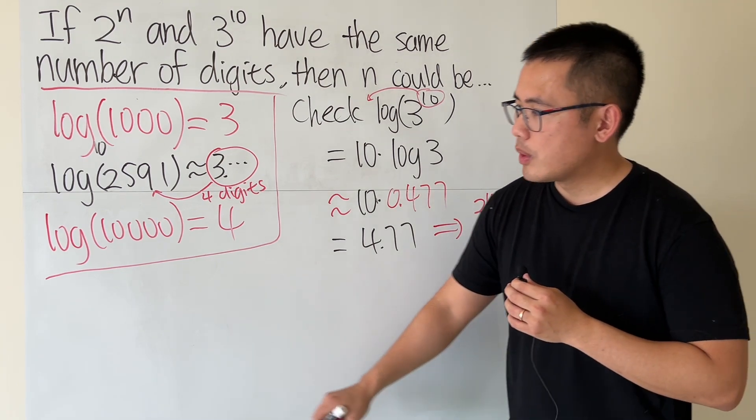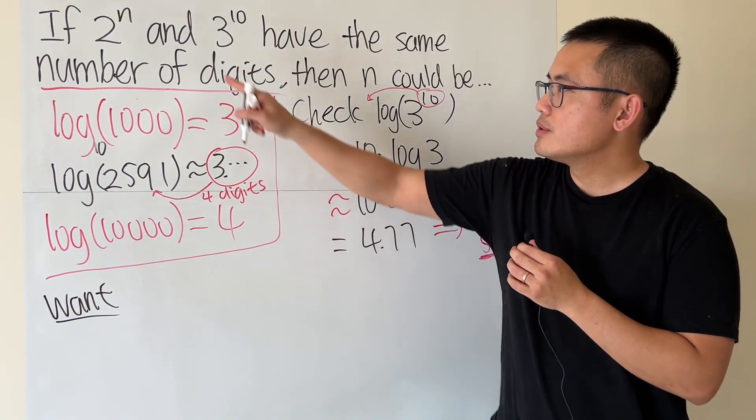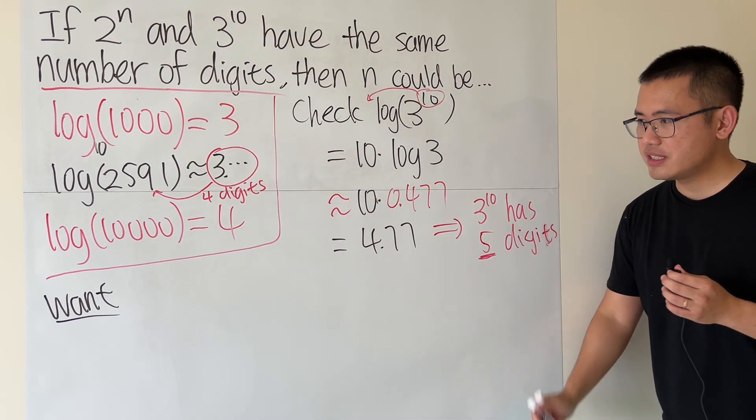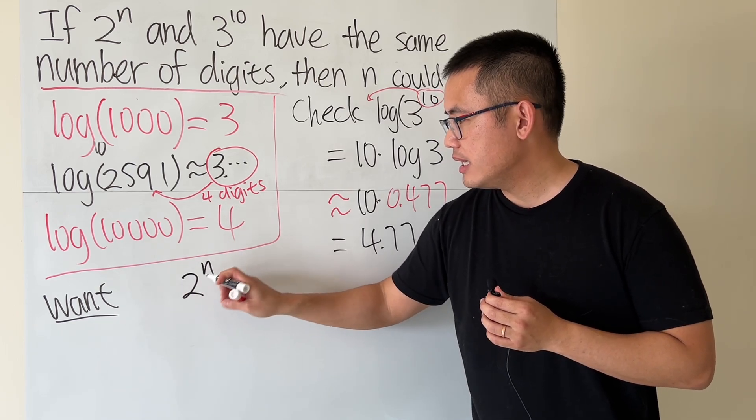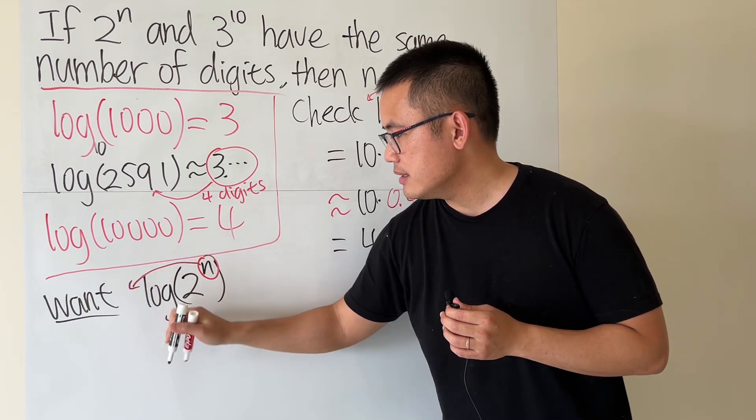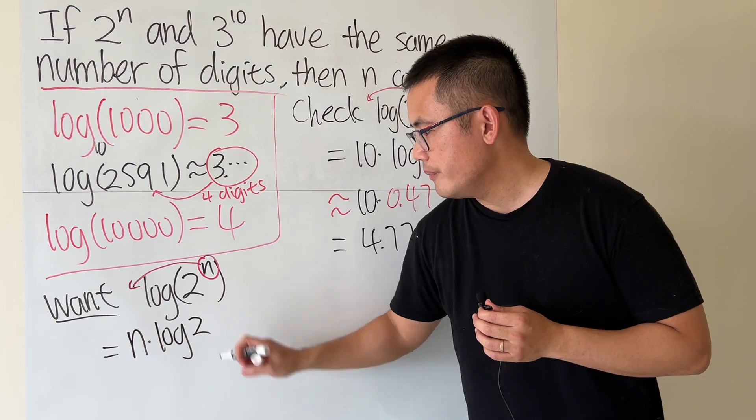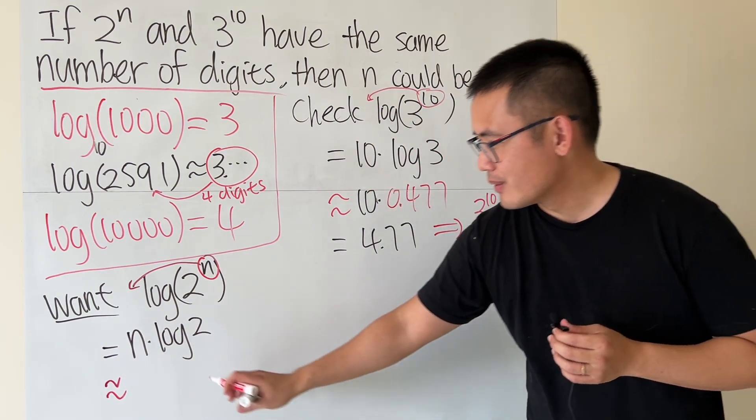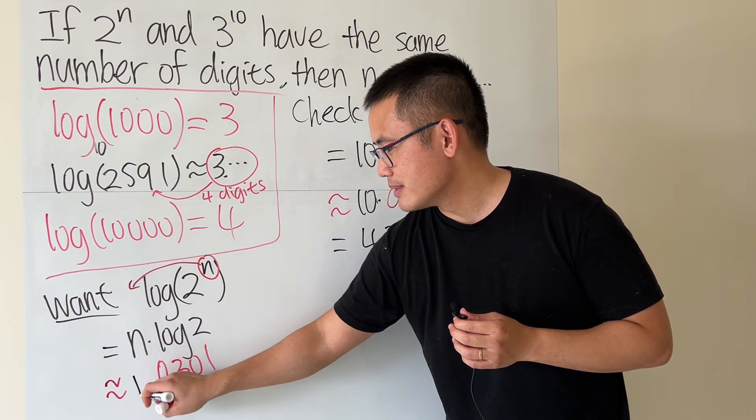Now, this is what we want. We want 2^n also end up with 5 digits. So what we need to do is, let's take a look at 2^n, and let's take log of it, and then let's put the n to the front. So this is n times log 2. And again, log 2 is some number that you have to remember.